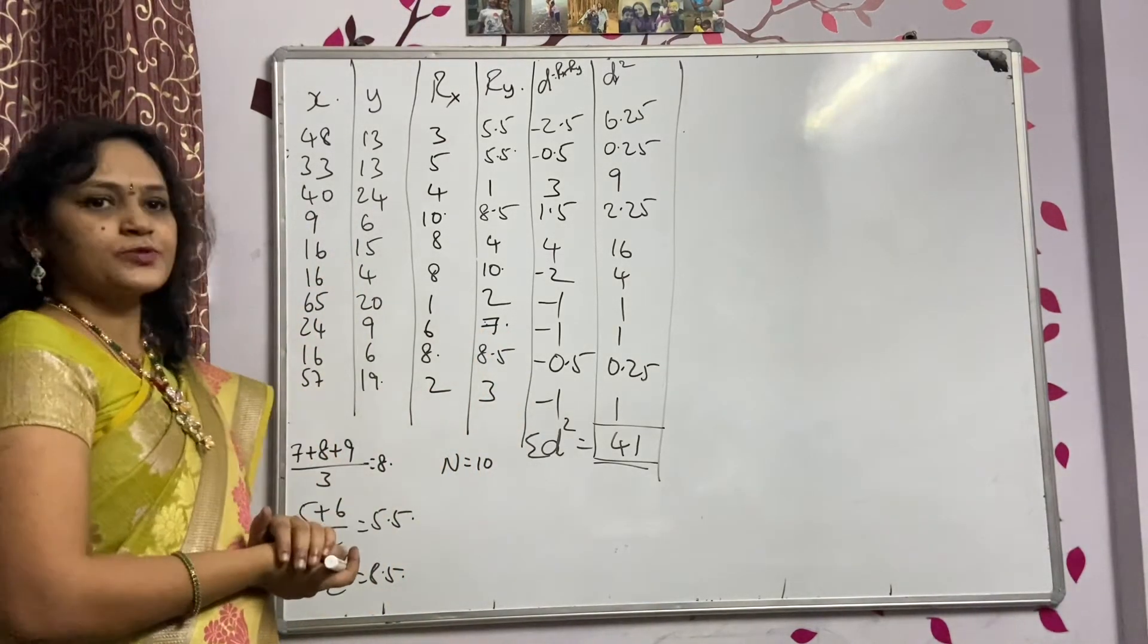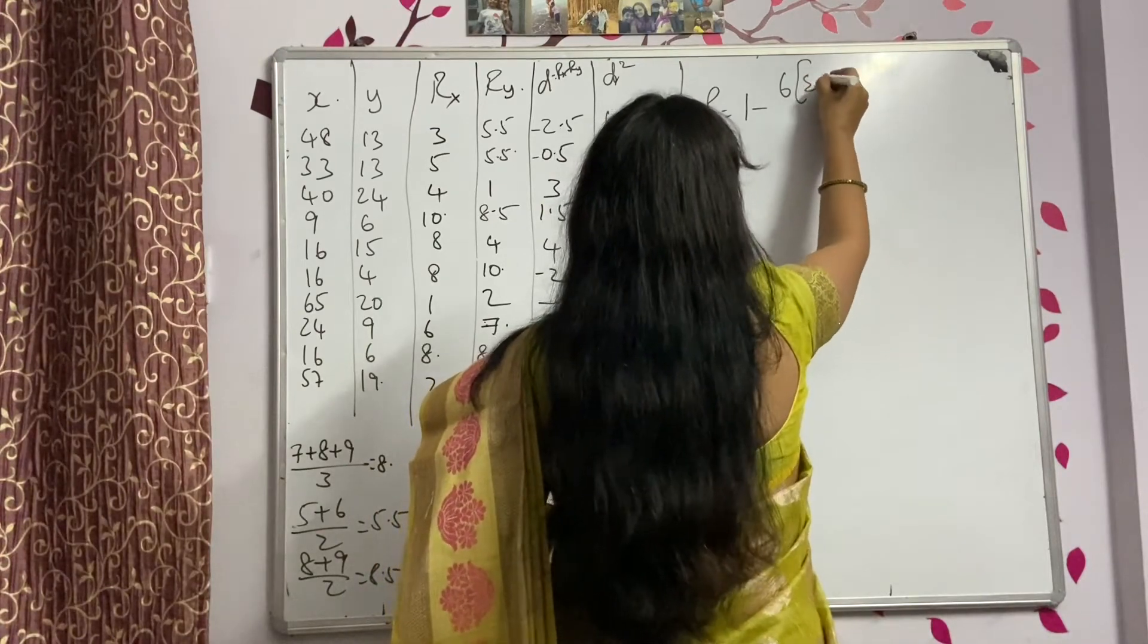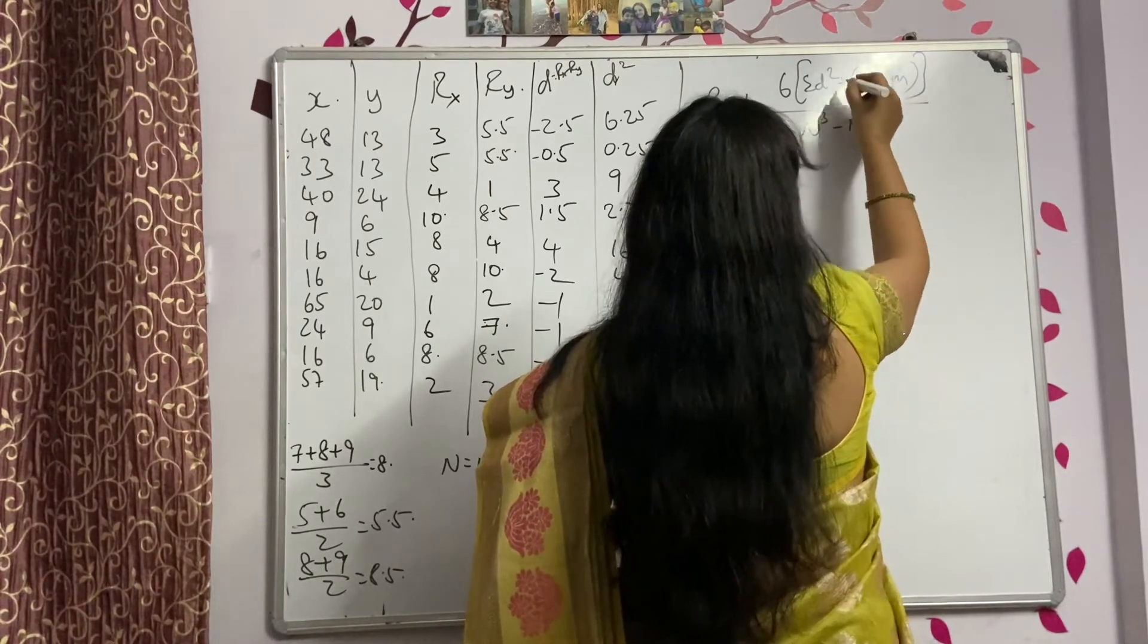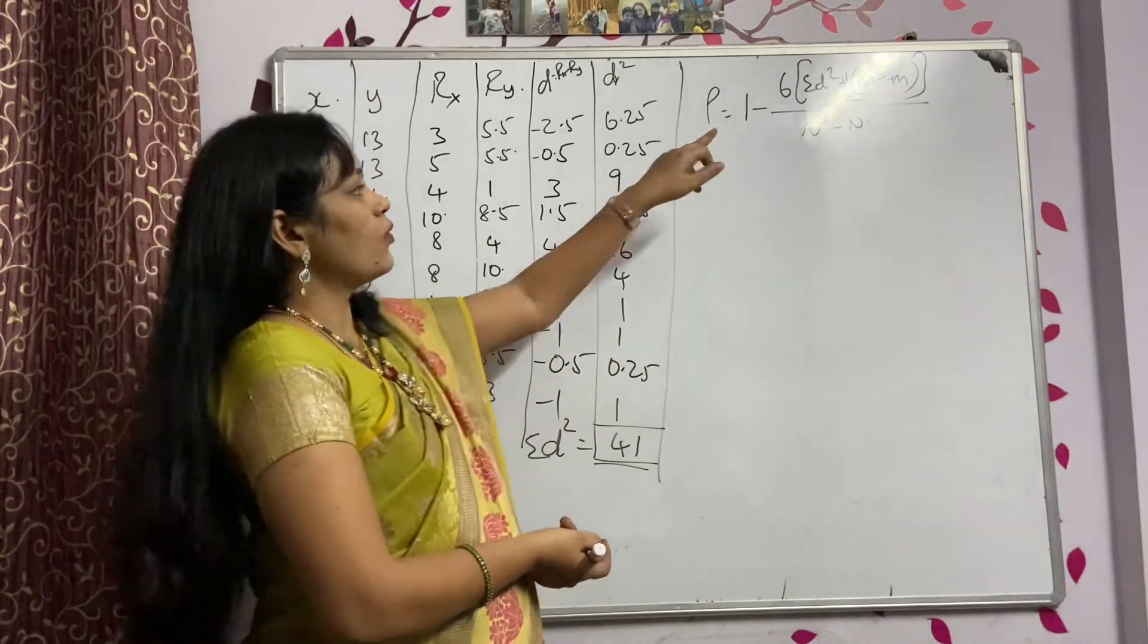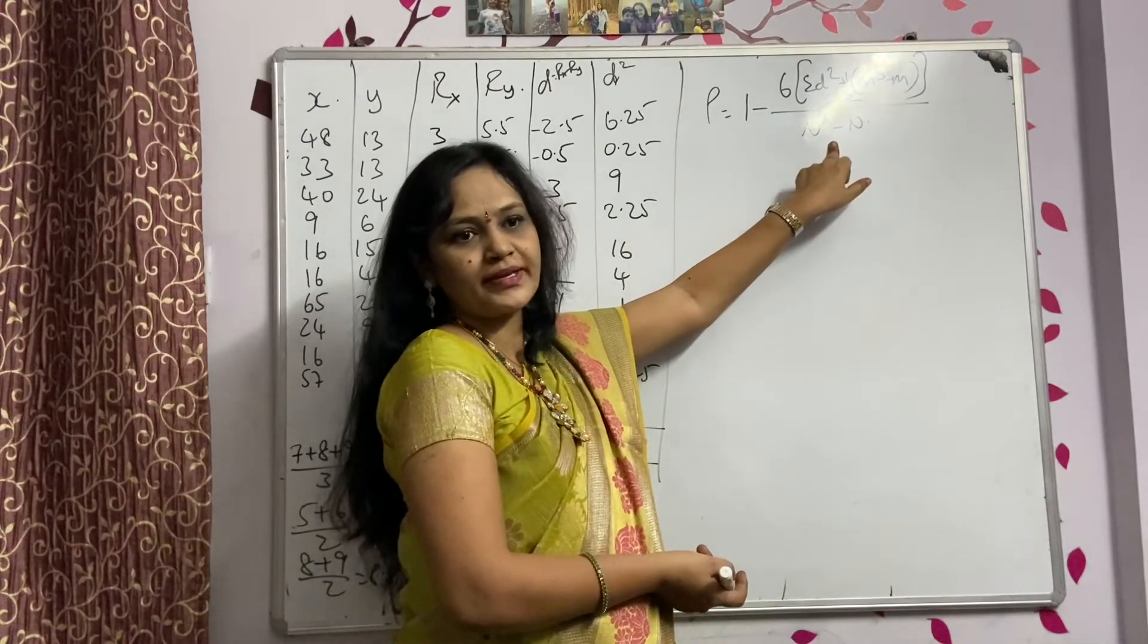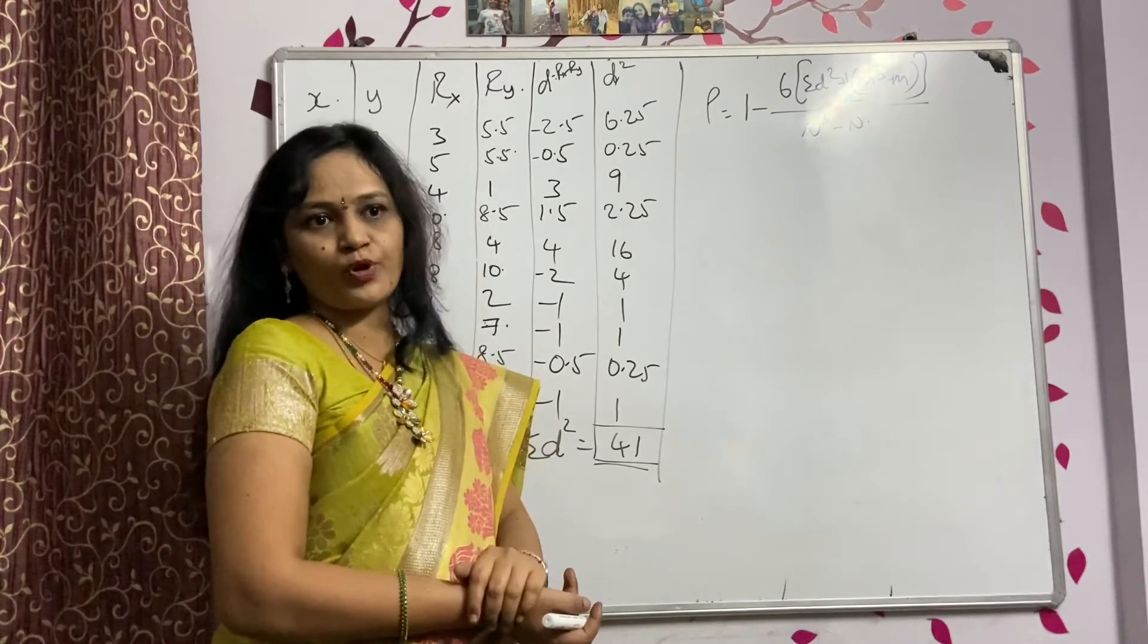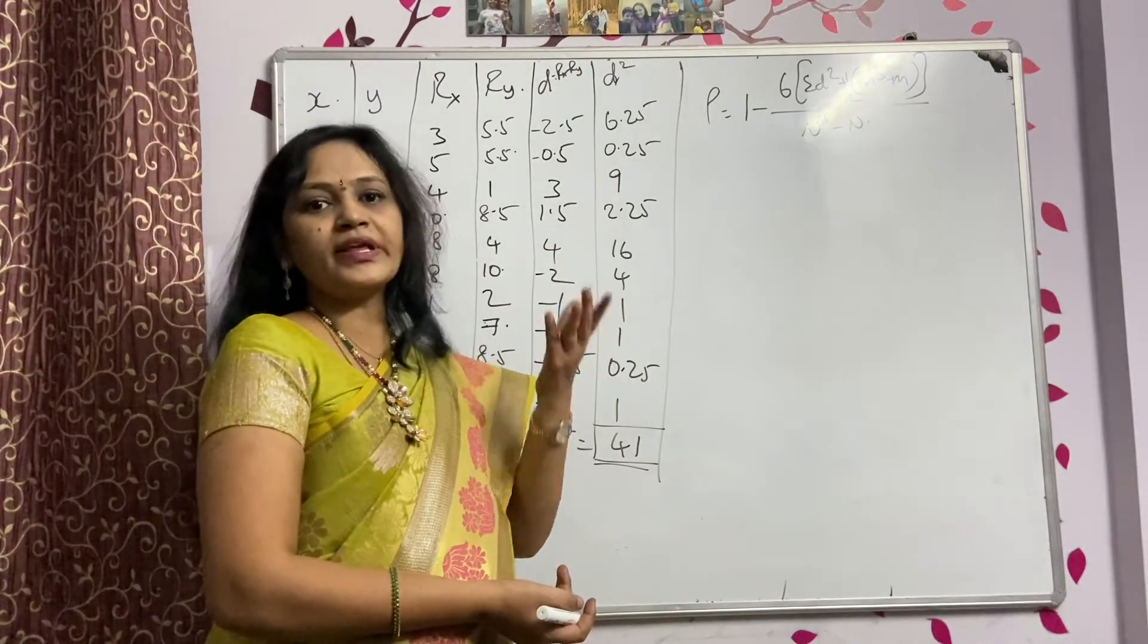Now we have to substitute in the formula. Write down the formula. Rank correlation is equal to 1 minus 6 into summation D squared plus MQ minus M divided by MQ minus M, 1 by 12 into, correct? So this is the formula. 1 minus 6 into summation D squared plus 1 by 12 into MQ minus M divided by MQ minus M. What is this M value? What is this M value? How to find out that M value? This is the very important one. Everyone will be getting doubt on it. What is this? Why everywhere it is keep reset, changing the value, how to take that value?